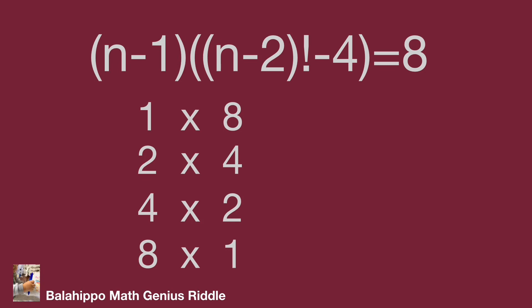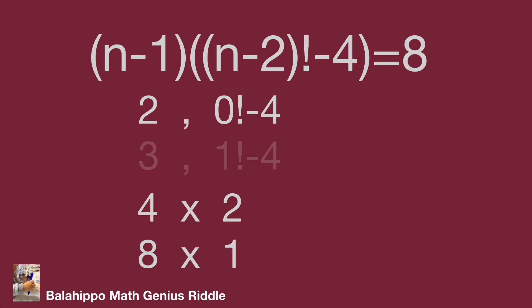Let's check these groups one by one. In the 1 times 8 group, n minus 1 equals 1 so n equals 2. Substituting into the second quantity: (2 minus 2) factorial minus 4 equals 0 factorial minus 4 equals minus 3, which is not 8, so this is not the answer. For the 2 times 4 group, n equals 3. Then (3 minus 2) factorial minus 4 equals 1 factorial minus 4 equals minus 3, which is not 4, so this group is also not the answer.